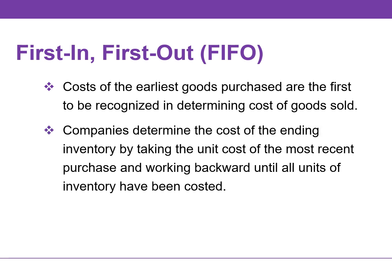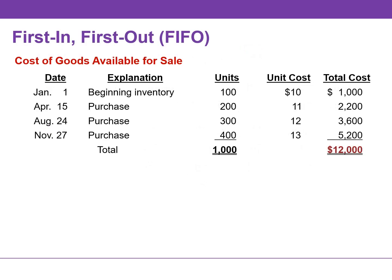Companies determine the cost of ending inventory by taking the unit cost of the most recent purchase and working backward until all units of inventory have been costed or accounted for. We will price the 450 units of ending inventory using the most recent prices.